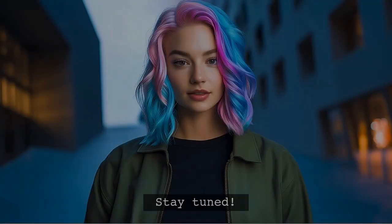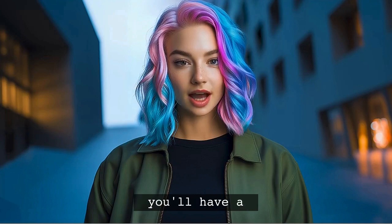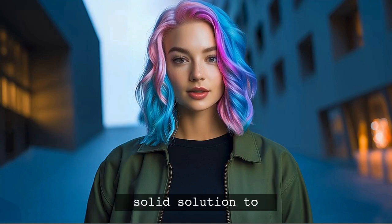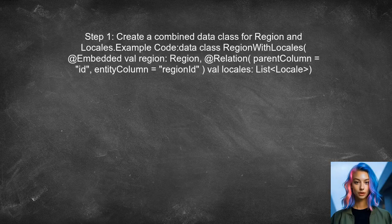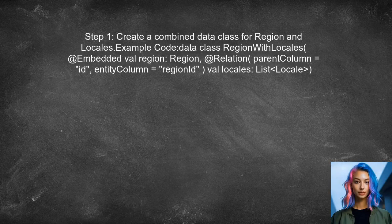Stick around, because by the end of this video, you'll have a solid solution that will save you time and improve your app's performance. To load the locales list automatically within the region entity, the user can utilize a relationship mapping in Room. This can be achieved by creating a new data class that combines both region and its associated locales.